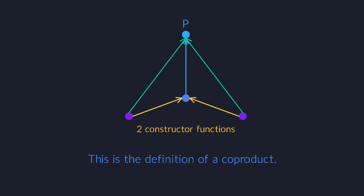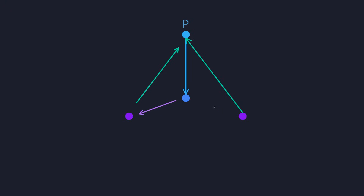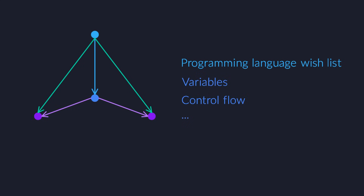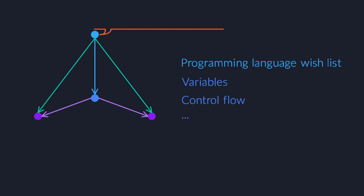And this is what I mean when I say that category theory unifies all of mathematics. If you can, just picture yourself as a software developer. You have been asked to design a new programming language, and you've already figured out that your language needs a way of constructing pairs of values. So you realize that you need a product type.